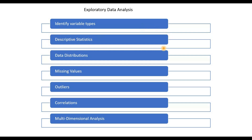Then we perform descriptive statistics, which tells us the different characteristics of our data. It gives us the measures of central tendency like mean, median, and mode, and also how spread our data is — the measures of dispersion — which can be obtained from the variance and the standard deviation. After descriptive statistics, we look at distributions, which tell us how data is distributed across each variable and help identify if data is skewed, or if there are biases or outliers.